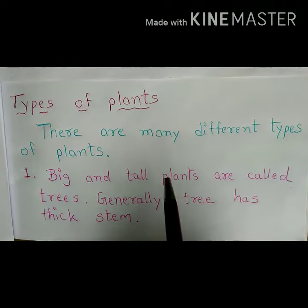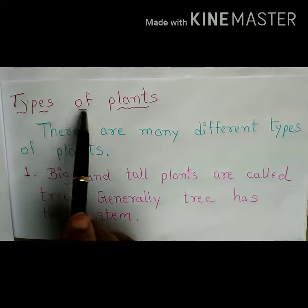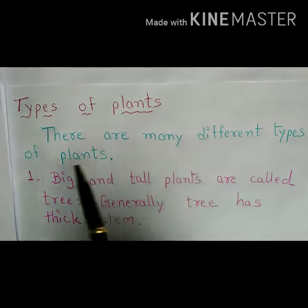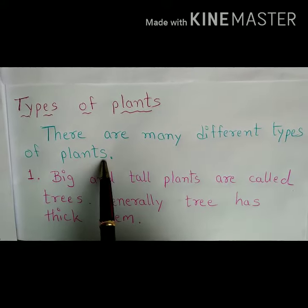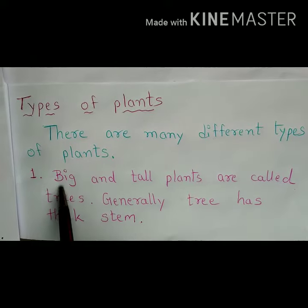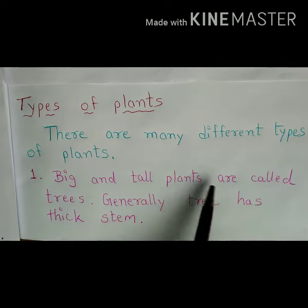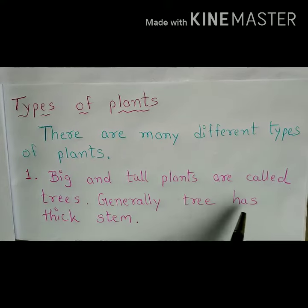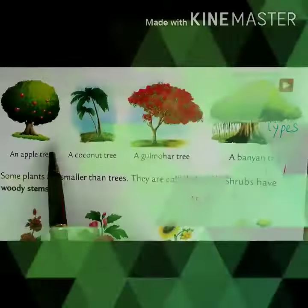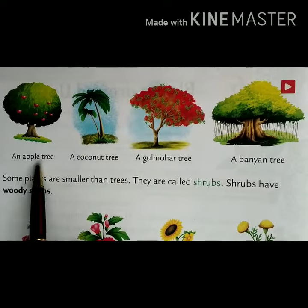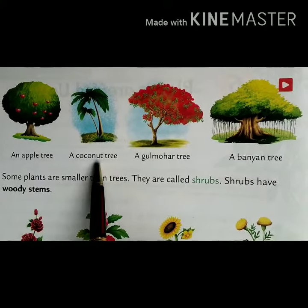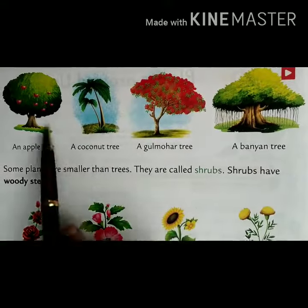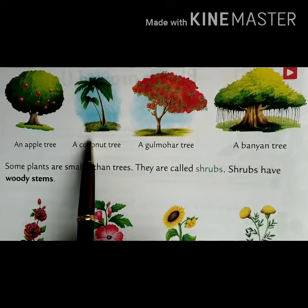Now we will see different types of plants. There are many different types of plants. First, big and tall plants are called trees. Generally, a tree has a thick stem. Examples of trees are apple, coconut, gulmohor, and banyan.